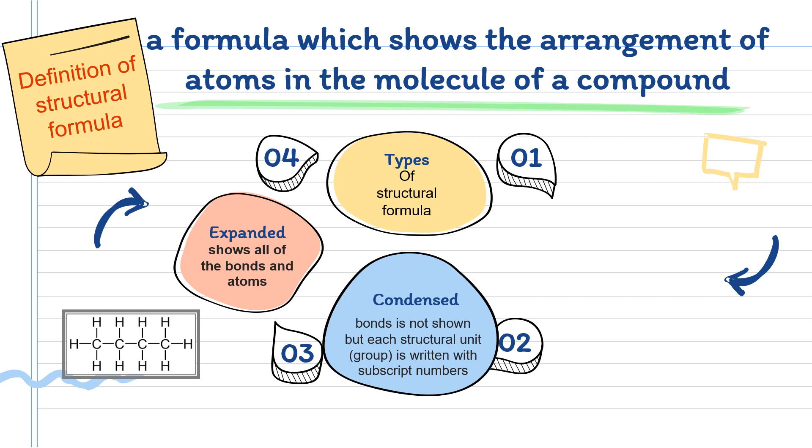If there are two almost similar groups bonded to the same atom, the condensed structural formula for that group is enclosed in brackets, and a subscript numeral is used to indicate the number. This is an example of condensed structure for butane.